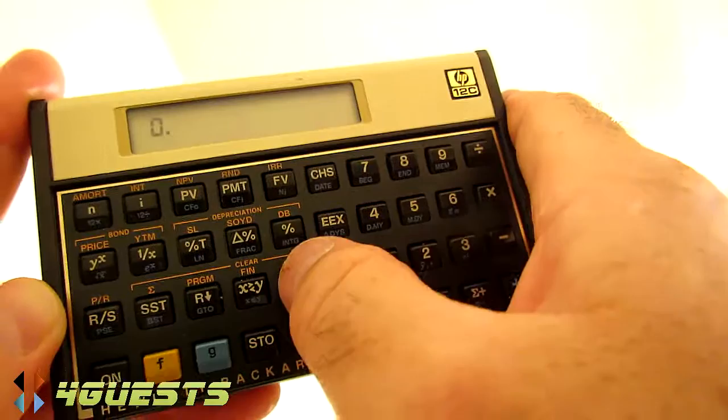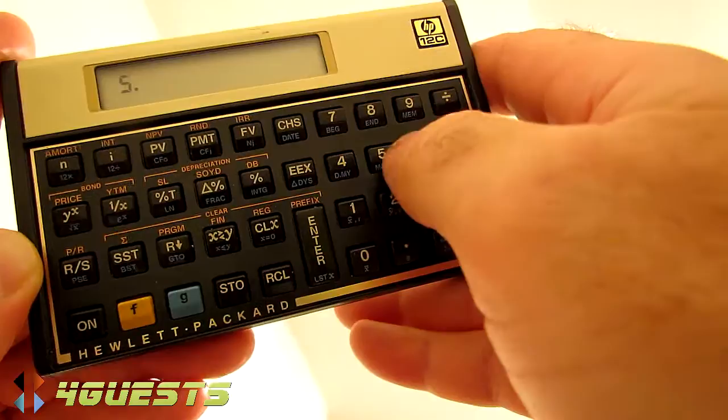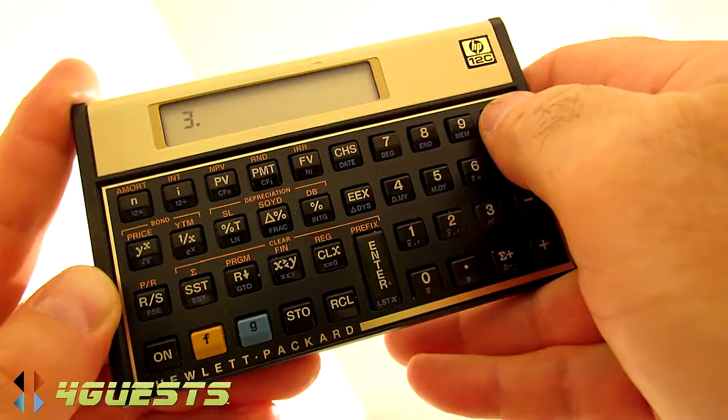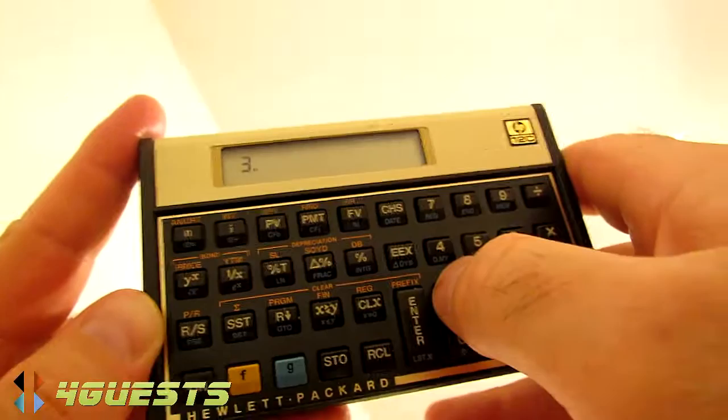Okay, five, enter, two, divided by three. Now we don't have the decimal set to carry out beyond just the one digit now.